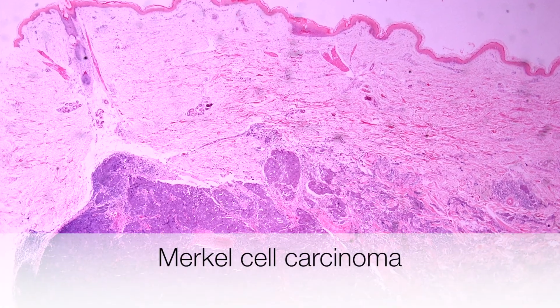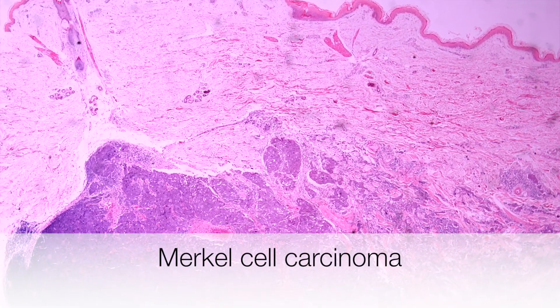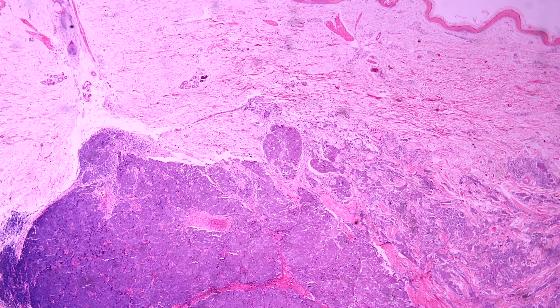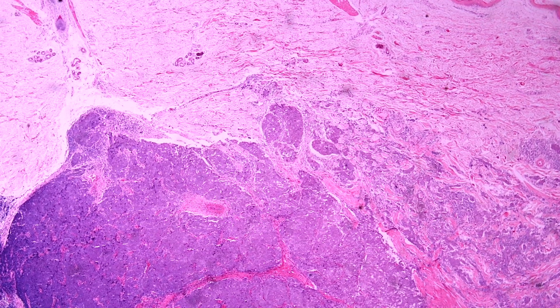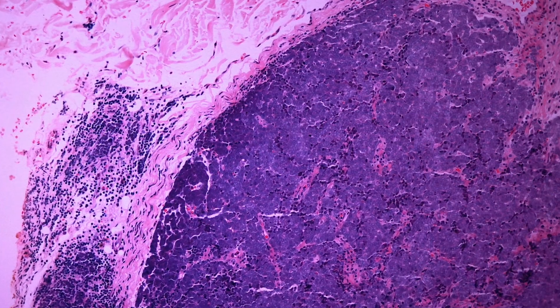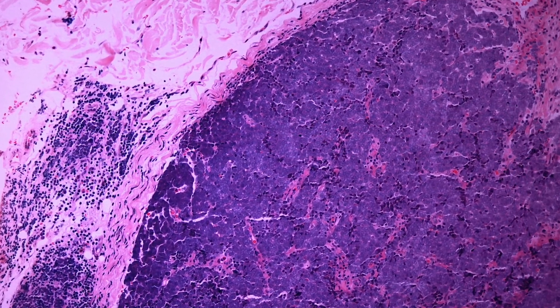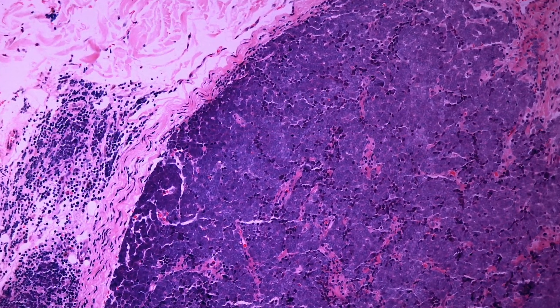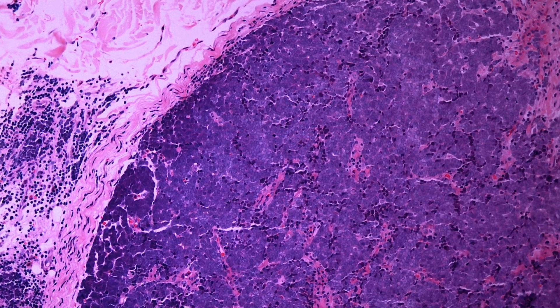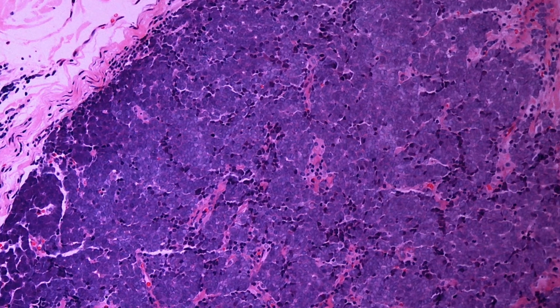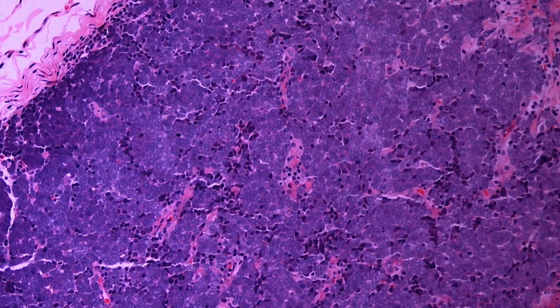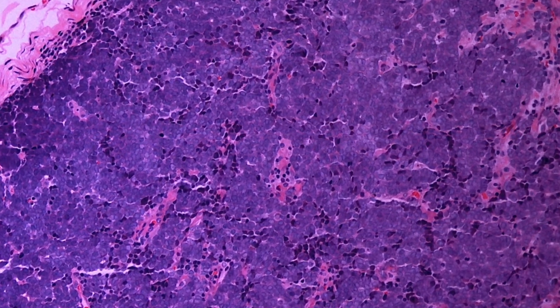This low power view shows the Merkel cell carcinoma deep in the dermis. Looking at the tumour at a higher power you can see that the cells have a neuroendocrine type of appearance, similar to small cell carcinoma of the lung for example.